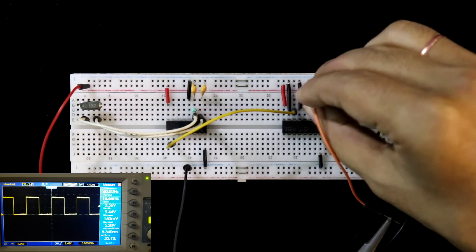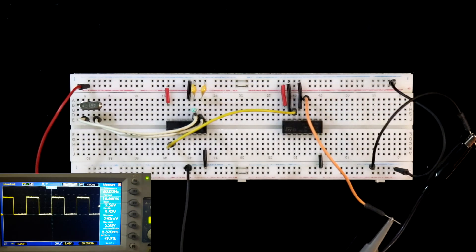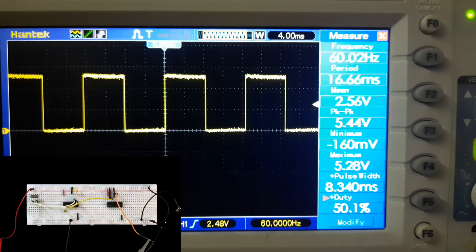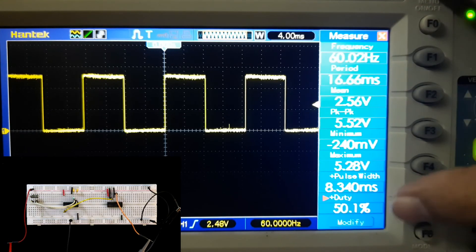Now we are getting 60 Hertz, sometimes it is showing 60.02 Hertz and sometimes it is showing 59.95 Hertz, so we can take it as 60 Hertz and the duty cycle is 50%.